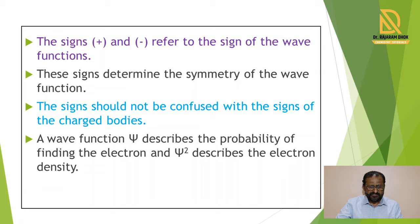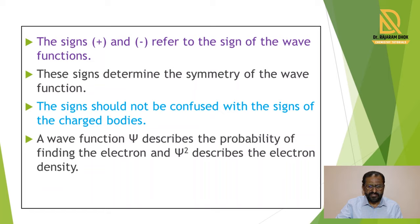These signs are used for the symmetry of the wave functions. You should be clear that these signs should not be confused with the signs of charged bodies — that is, positive and negative charge. It is a symbol only showing the symmetry of the wave functions. The wave function psi describes the probability of finding the electrons, and psi squared describes the electron density of that particular molecule.